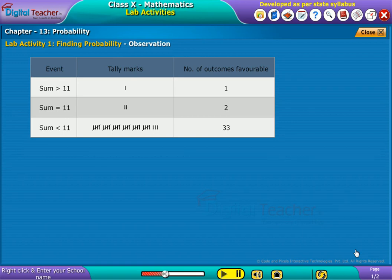Whereas the chances of occurring the sum of two dice equal to 11 are two. Therefore, the number of favorable outcomes are two.